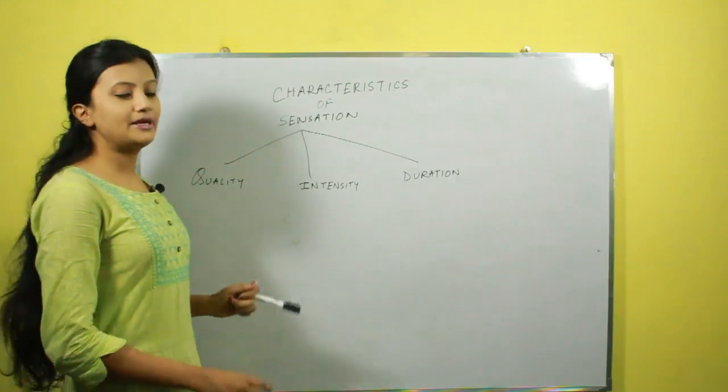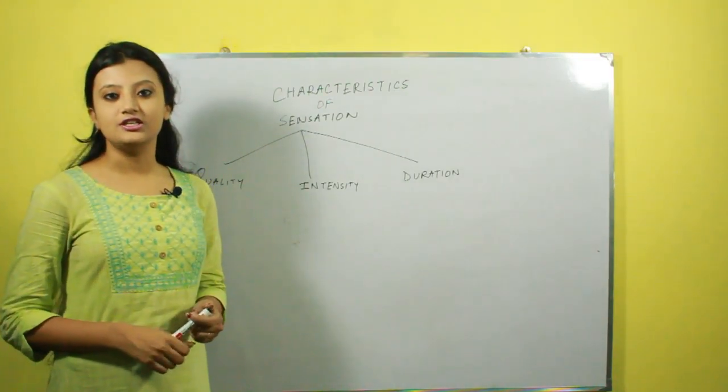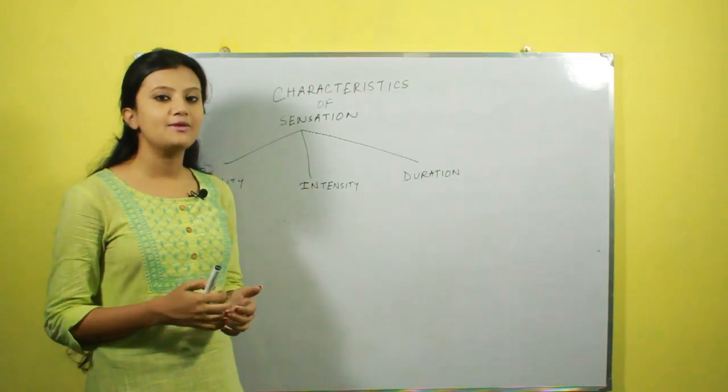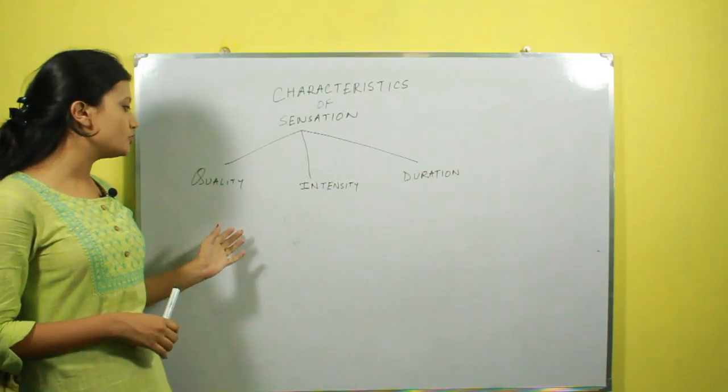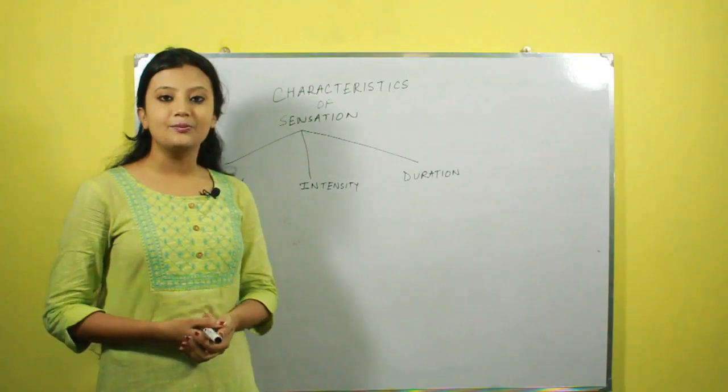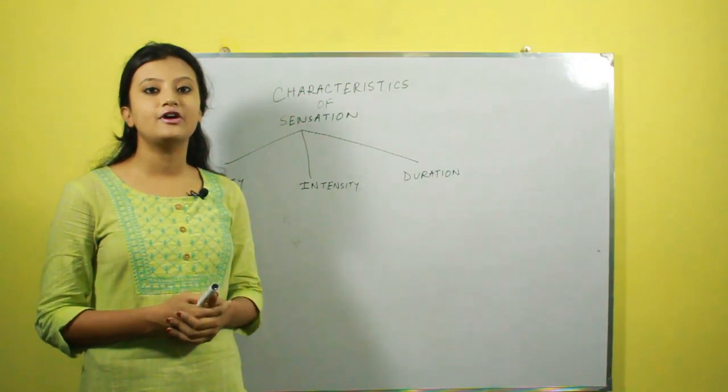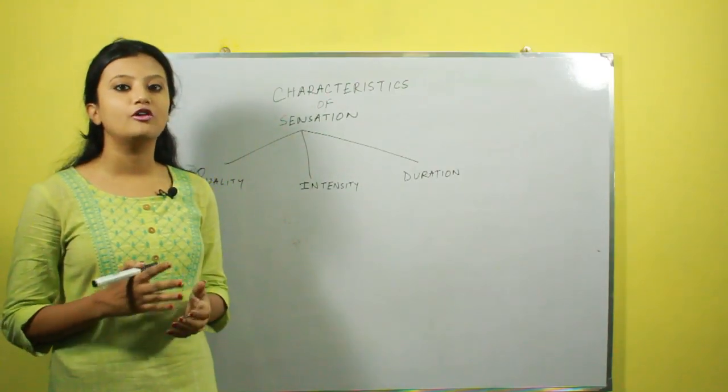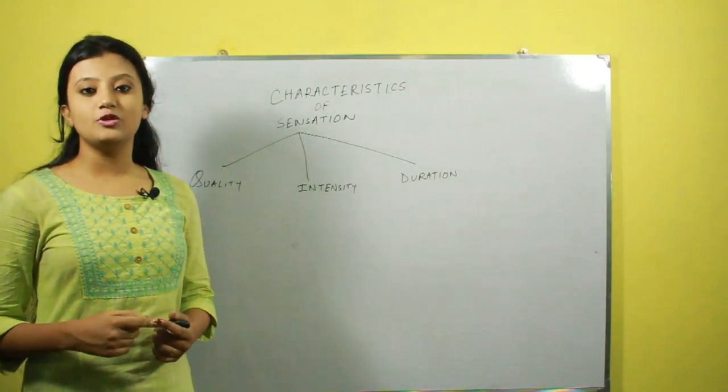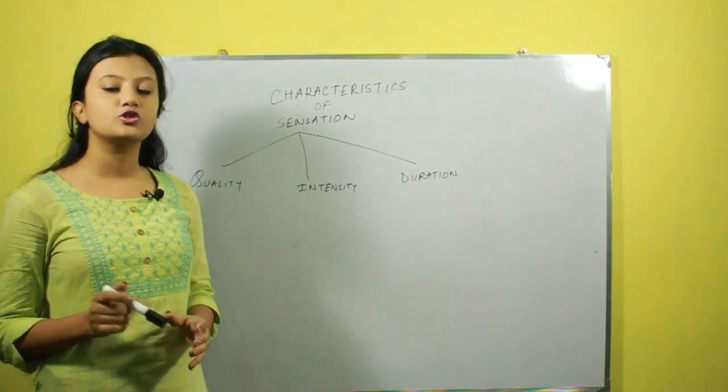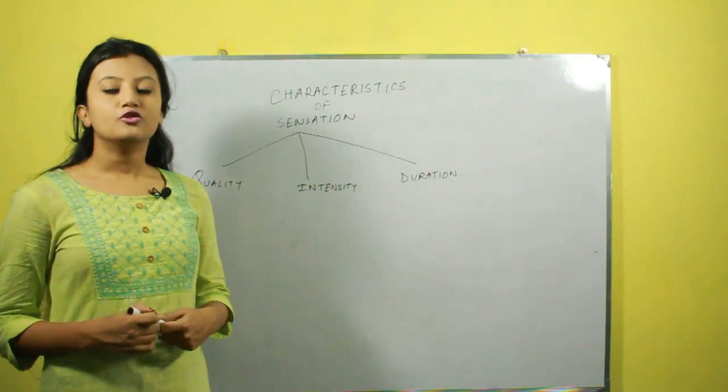What are the characteristics of sensation? The first fundamental characteristic of sensation is their quality. It has to do with the type of stimulus that produces them. For example, a sound produces a sensation that differs from the sensation of flavor. Within stimuli of the same type, sensations also differ in their quality. For example, red has a different quality than yellow.